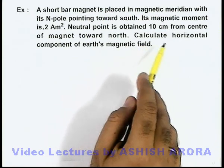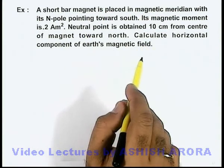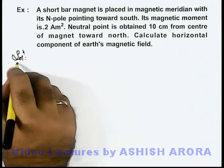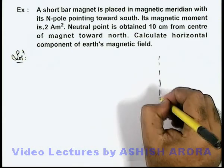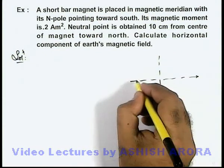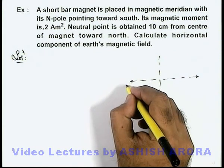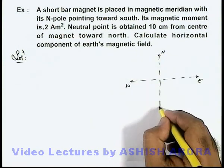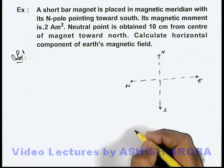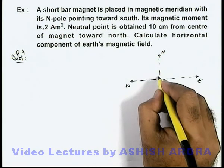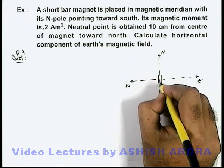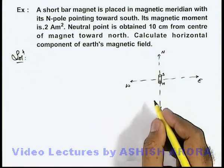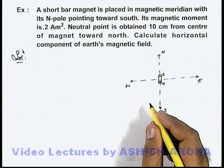We are required to calculate the horizontal component of the Earth's magnetic field. If we draw the situation, first we draw the directions at the point where the magnet is located — these are the east-west directions, this is north and south. The short bar magnet is placed in the magnetic meridian with its north pole pointing towards south and south pole towards north.